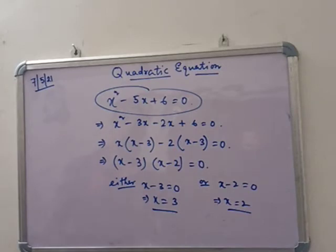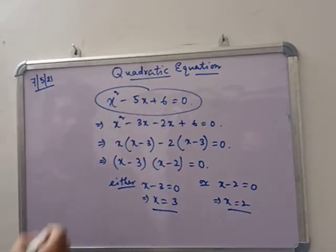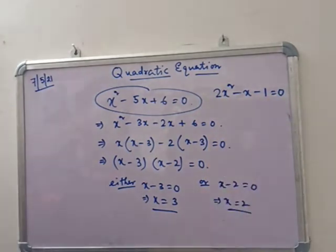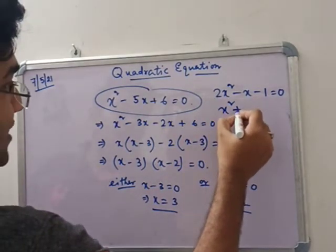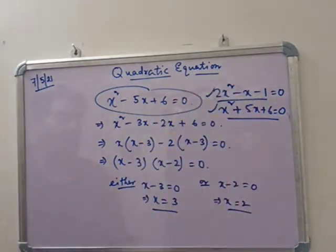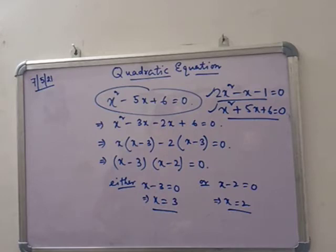Now my question is: can we solve any equation by middle-term factor? No. Suppose I write 2x squared minus x minus 1 equals 0 — can we solve that by middle-term factor? Or we can write x squared plus 5x plus 6 equals 0, which can be solved by middle-term factor. Some quadratic equations we cannot solve by middle-term factor, so we are introducing Sridharacharya's formula.